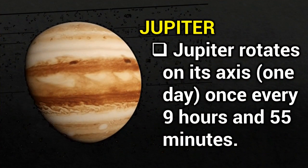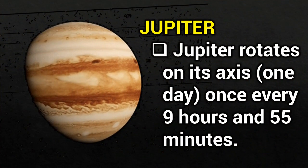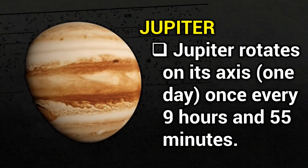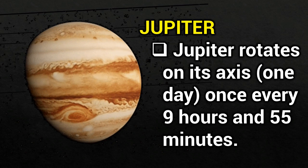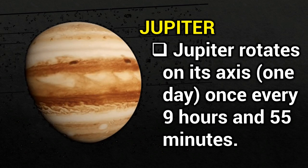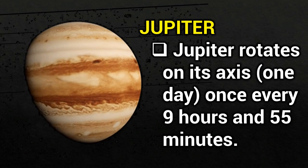Jupiter. Jupiter rotates on its axis once every 9 hours and 55 minutes.